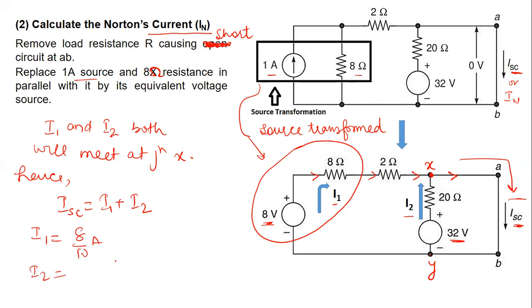So I1 is basically 8 divided by 10. And I2 is equal to 32 divided by 20 ampere. So ISC is equal to 8 by 10 plus 32 by 20. So this is equal to 16 plus 32, 48 by 20. So it is 2.4 ampere. ISC is 2.4 ampere, which is flowing in this particular branch.